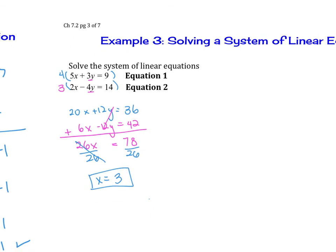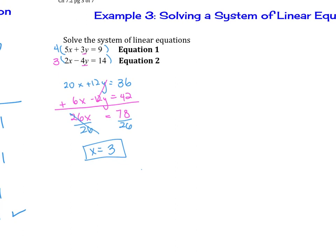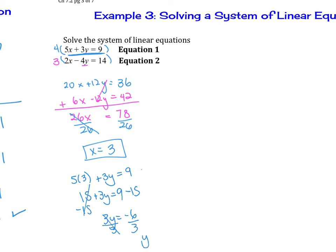Now solve for y by plugging x equals 3 into the original equation 1, since the smaller numbers are nicer. So 5 times 3 plus 3y equals 9, giving 15 plus 3y equals 9. Subtract 15 from both sides: 3y equals negative 6. Divided by 3, y equals negative 2. So the solution to the system is (3, −2). You could plug it back in to check.